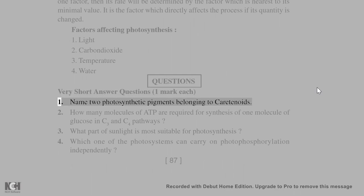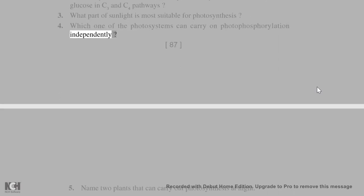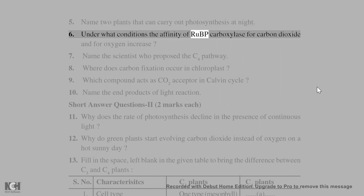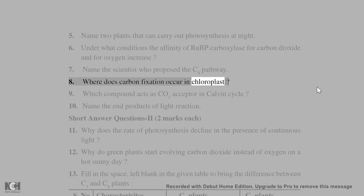Questions - Very short answer questions (1 mark each): 1. Name two photosynthetic pigments belonging to carotenoids. 2. How many molecules of ATP are required for synthesis of one molecule of glucose in C3 and C4 pathways? 3. What part of sunlight is most suitable for photosynthesis? 4. Which one of the photosystems can carry on photophosphorylation independently? 5. Name two plants that can carry out photosynthesis at night. 6. Under what conditions the affinity of RuBP carboxylase for carbon dioxide and for oxygen increase? 7. Name the scientist who proposed the C4 pathway. 8. Where does carbon fixation occur in chloroplast? 9. Which compound acts as CO₂ acceptor in Calvin cycle? 10. Name the end products of light reaction.